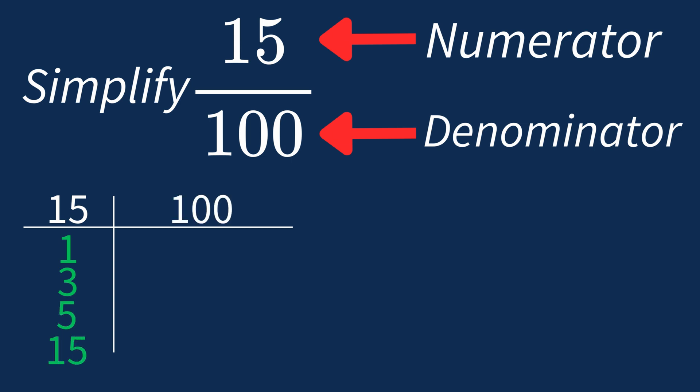For 100, the factors are 1, 2, 4, 5, 10, 20, 25, 50, and 100.